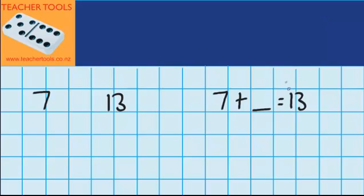So just like in the last examples I'm going to start at 7 and count on until I get to 13. So I will have 8, 9, 10, 11, 12 and 13.